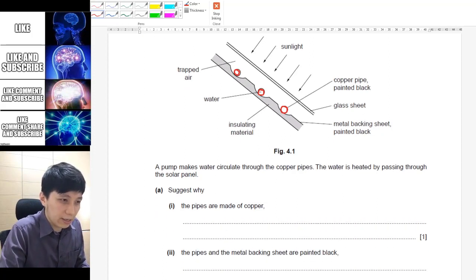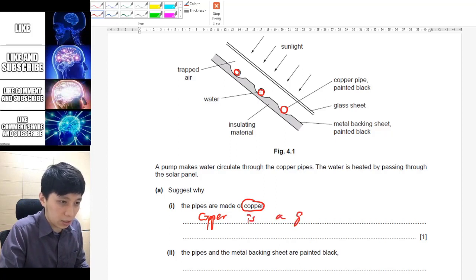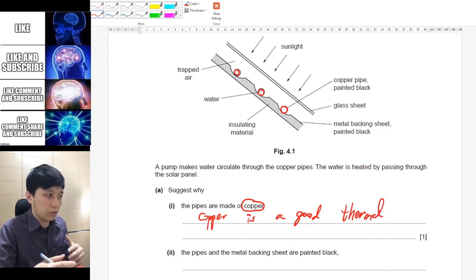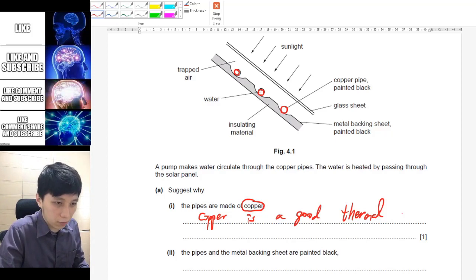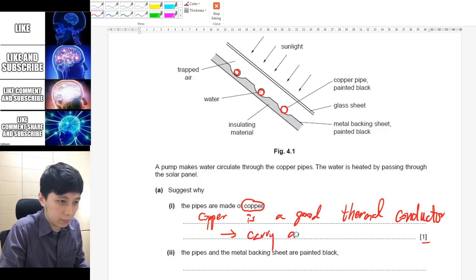So the explanation is simply relating to physics. Copper, if you remember, there was a demonstration showing you that copper was the best conductor among the different kinds, like steel was the worst. So you can see that copper is a good thermal conductor. I would like to add this because we are talking about thermal, it's nothing to do with electrical here. So thermal conductor, and therefore if you want to say more, although it's just one point, you can say that it can carry away the heat energy faster.